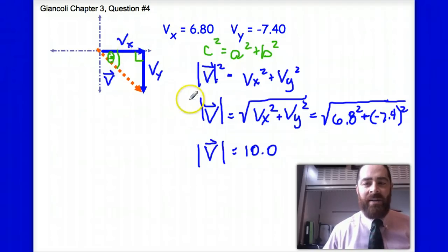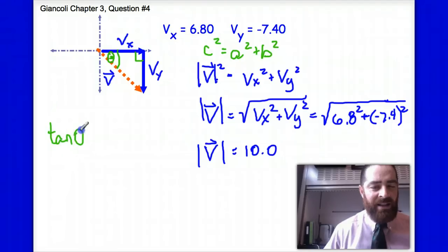So recognizing that I can use the tangent function, I can say that tan theta is equal to opposite over adjacent, or in this case vy over vx. And I can plug these numbers in and say that vy is negative 7.4 and vx is 6.8.